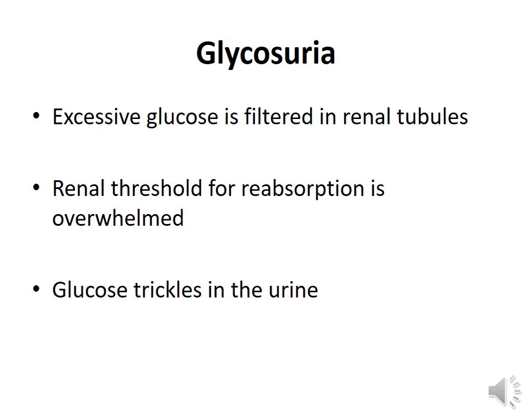Glycosuria is seen in diabetes because there is a reduction in the ability of the kidneys to reabsorb glucose above a particular level. Whatever glucose is filtered in the glomerulus is usually reabsorbed in the renal tubules, but in diabetes there is excessive glucose in the filtrate. When the renal threshold for reabsorption is overwhelmed, glucose trickles into the urine, causing glycosuria.